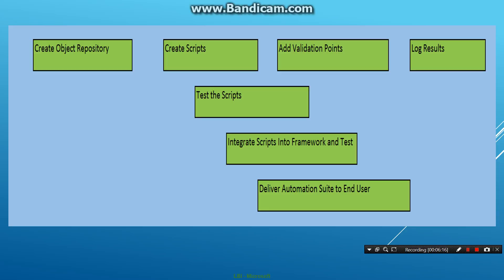Once that is in place, the script building activity begins, with various activities happening in parallel. In bigger teams, somebody might be creating an object repository or object descriptions for later use. Others would be writing scripts to execute different functionalities, adding validation points to the scripts, and logging results — all of these activities happen in parallel.